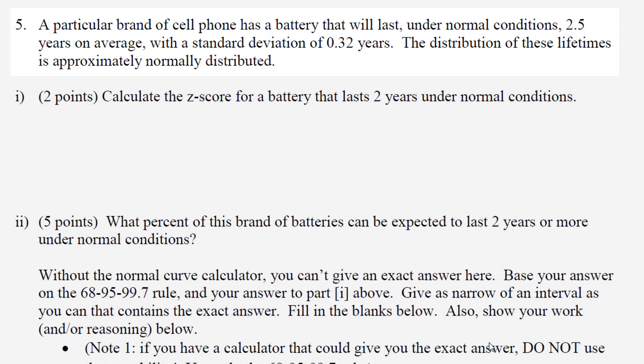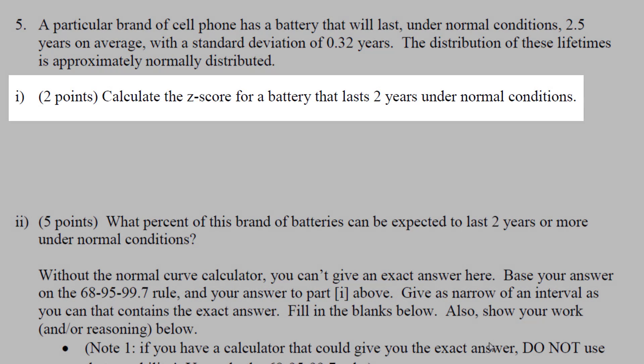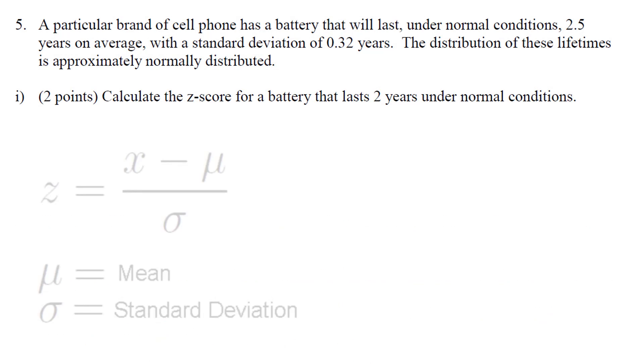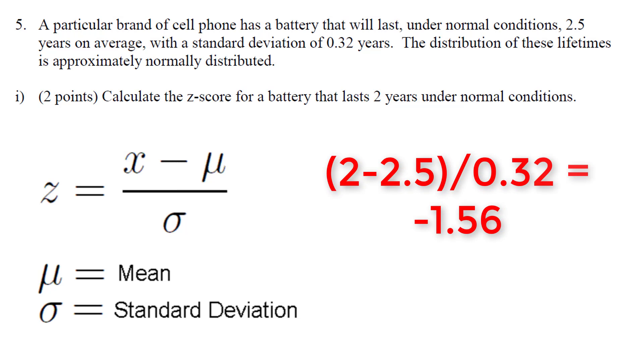The first thing we need to do is calculate the z-score. With this z-score, we need to take the observation, which is 2, and the mean, which is 2.5. Observation minus mean over standard deviation of 0.32. This will give us a z-score of negative 1.56.